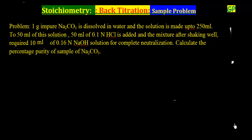Now this problem is related to the concept of back titration. The question says we have 1 gram of impure Na2CO3 and it is dissolved in water and the solution is made up to 250 ml. To 50 ml of this solution, 50 ml of 0.1 N HCl is added and the mixture after shaking well required 10 ml of 0.16 N NaOH solution for complete neutralization. Calculate the percentage purity of sample of Na2CO3.